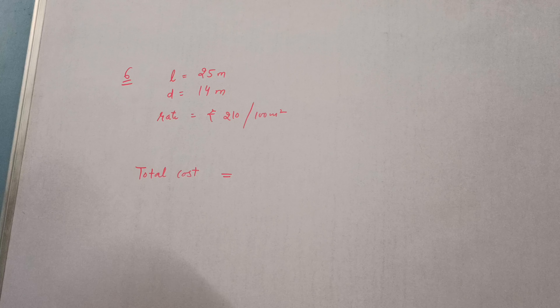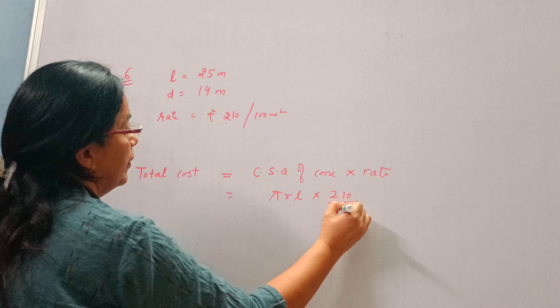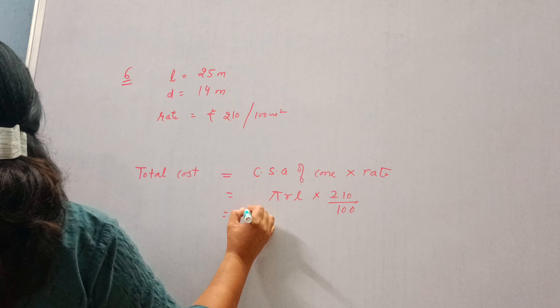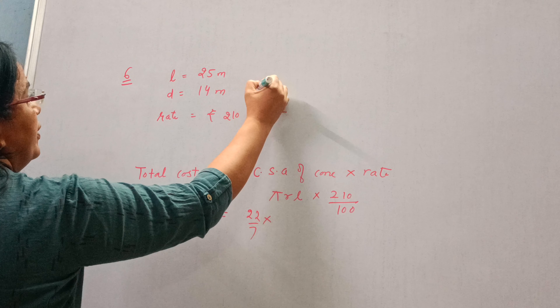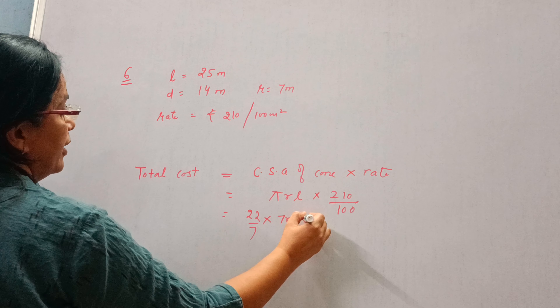Now, we need to whitewash its curved surface. So what is the formula for total cost? The formula for total cost is area into rate. The area we want to whitewash is the curved surface area. So total cost will be equal to curved surface area of cone into rate.